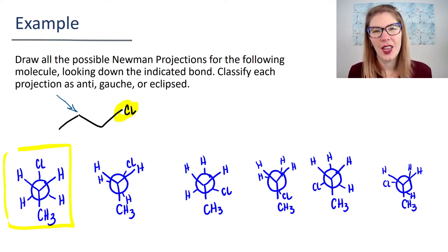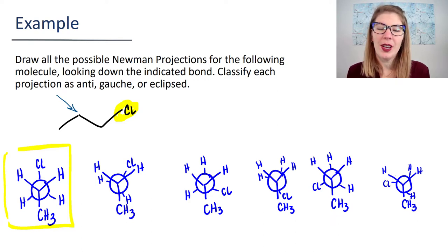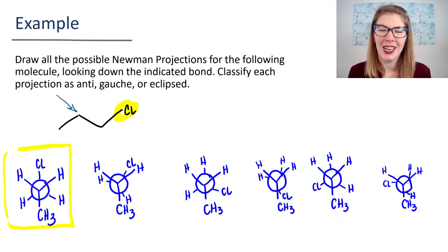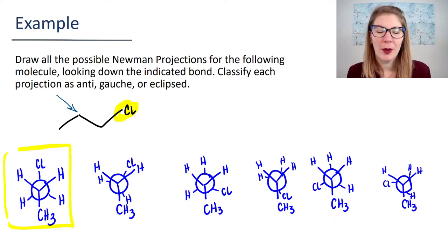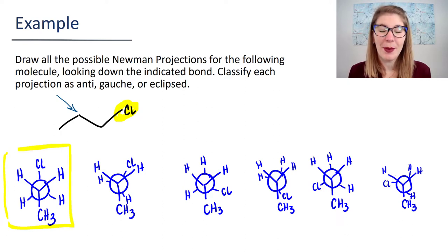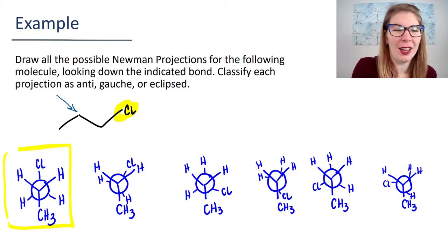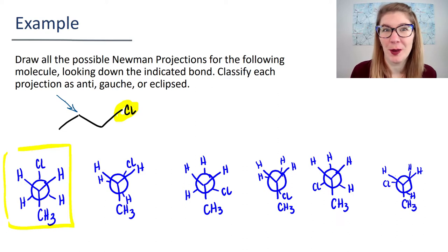If you haven't yet drawn all the remaining Newman projections, just focus first on this one and then pause and try to get the others on your own. If you are ready to compare all of them, notice how there are six. That is going to be very typical when you have a conformation with two or more groups on the front and back carbon. Take a moment to make sure that you've drawn all the same Newman projections as mine.